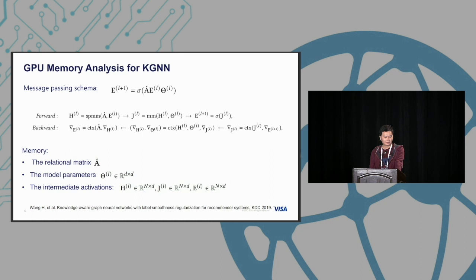We looked at these equations to see the memory cost. The first memory cost is the relation matrix A, which is binary, so it's not expensive. We also have model parameters, which are also not very expensive, something like d by d where d is the size of embeddings. We find that the most dominant memory cost is the intermediate activations like H^l and E^l in the computational graph. The size is n by d, so for each entity we need to store the corresponding activations.